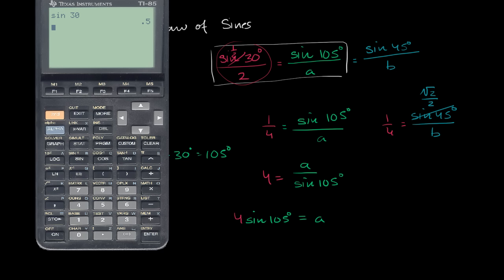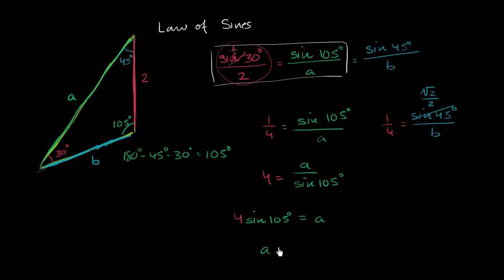Let's get our calculator out. Four times the sine of 105 gives us approximately — rounding to the nearest hundredths — 3.86. So A is approximately equal to 3.86, which looks about right. If this is two and the angles are drawn appropriately, that looks like about 3.86.